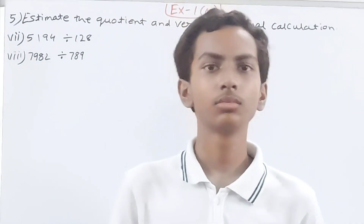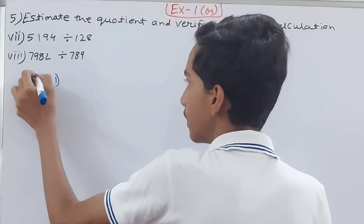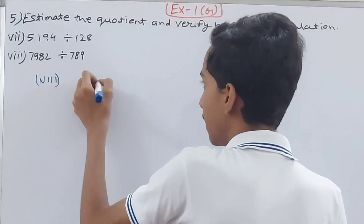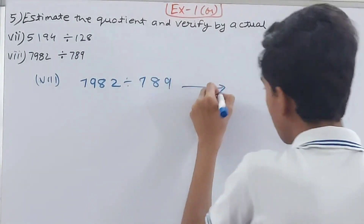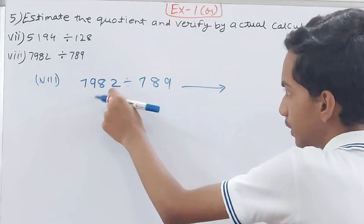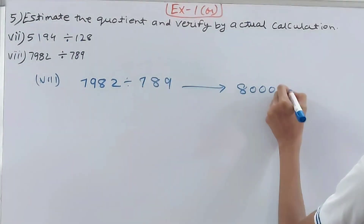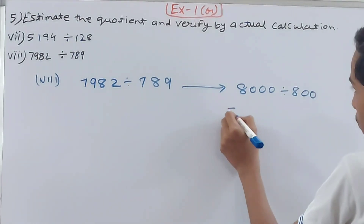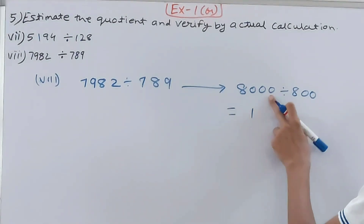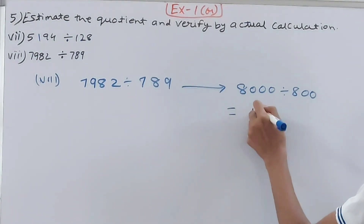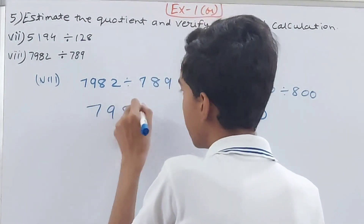Eighth part: 7982 ÷ 789. Round 7982 to nearest thousands giving 8000, round 789 to nearest hundreds giving 800. So estimated is 8000 ÷ 800. There are three zeros in 8000 and two zeros in 800, so three minus two gives one zero. Estimated quotient is 10.